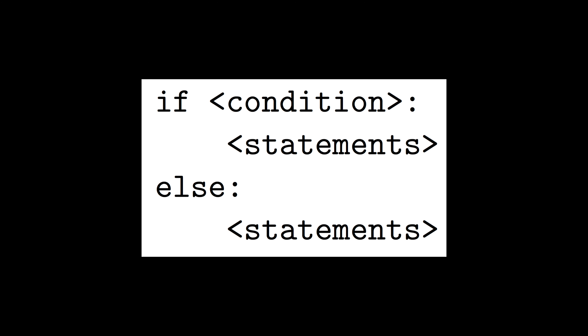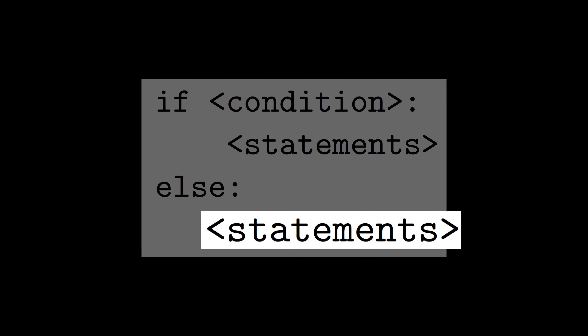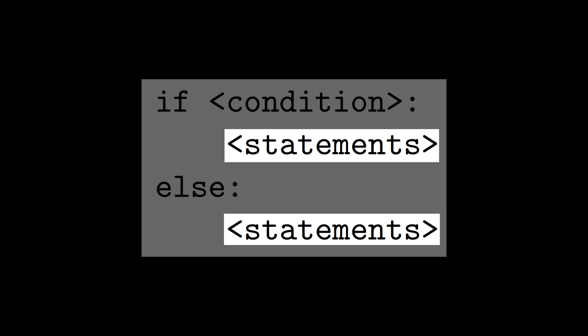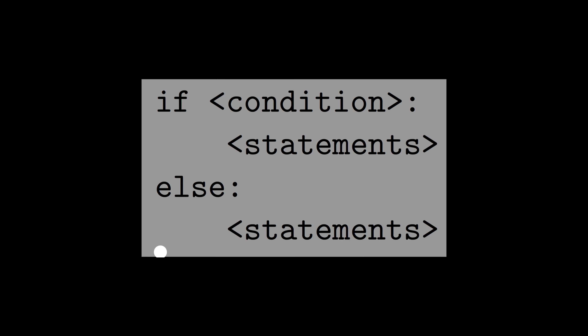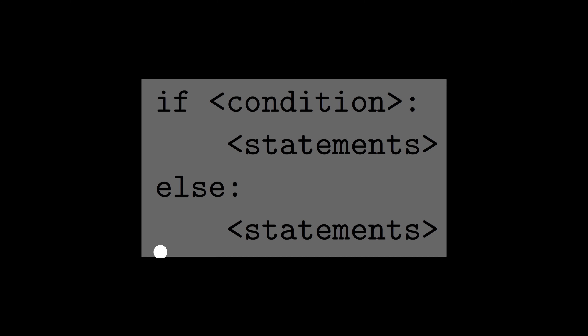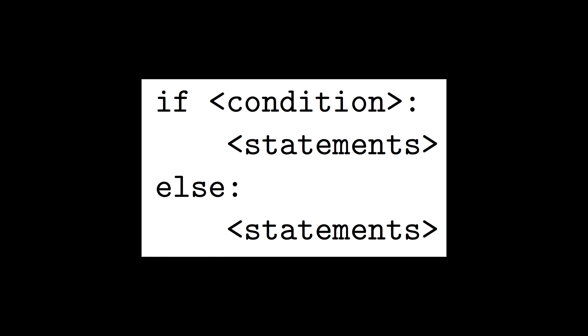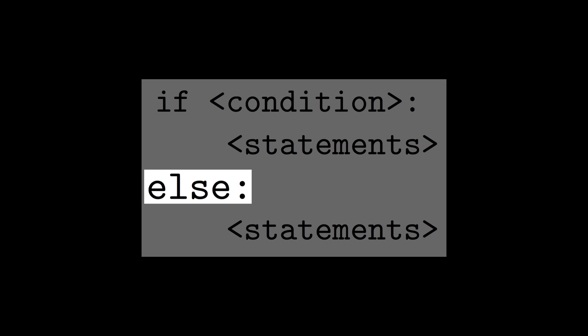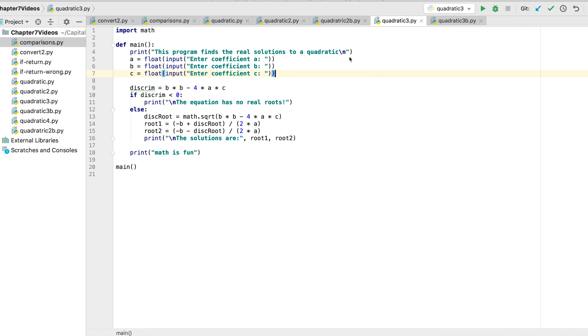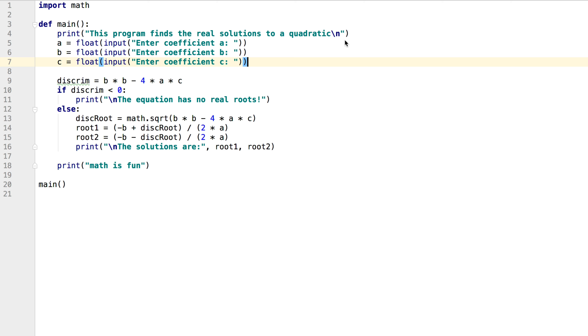Here's the syntax diagram for the variation on the if statement that adds an else clause. The semantics are: if the condition is true, the statements indented underneath the if statement are executed and the else statements are not. If the condition is false, the if statements are skipped and the statements underneath the else are executed. So one of these two sets of statements is always executed, but both are never executed. Afterwards, it continues with the code at the same indentation level as the else. Note that there is never any condition after the else - the only character to place after else is a colon.